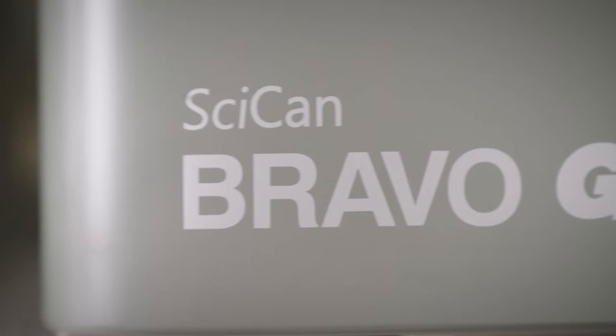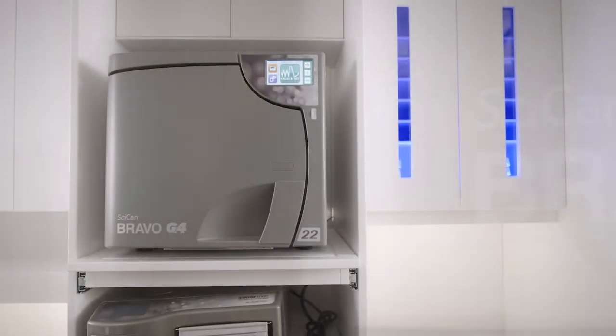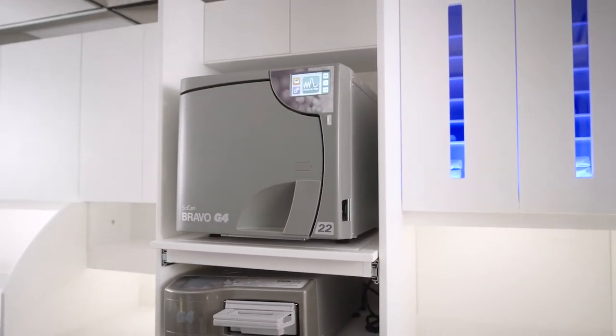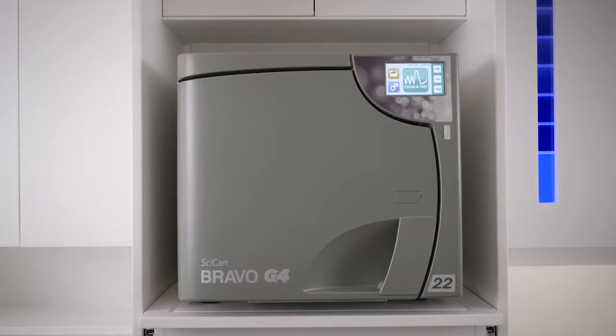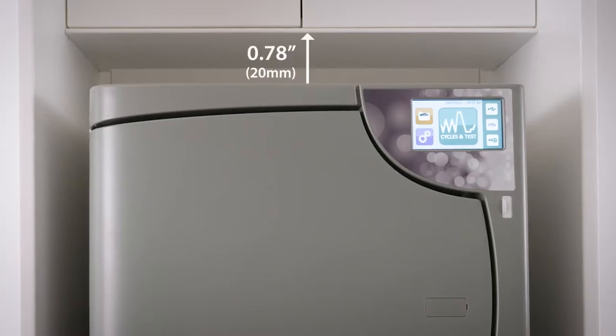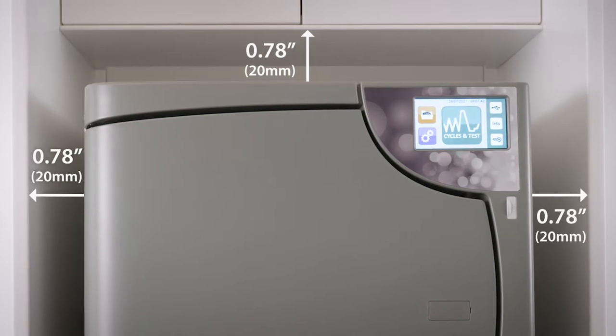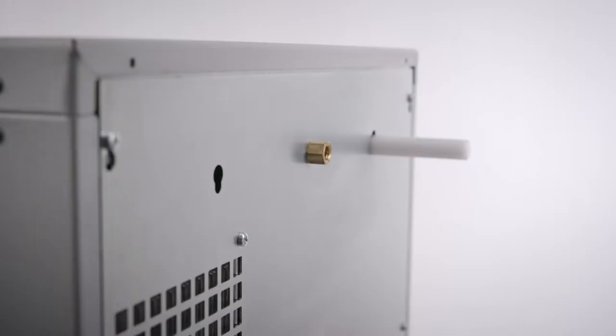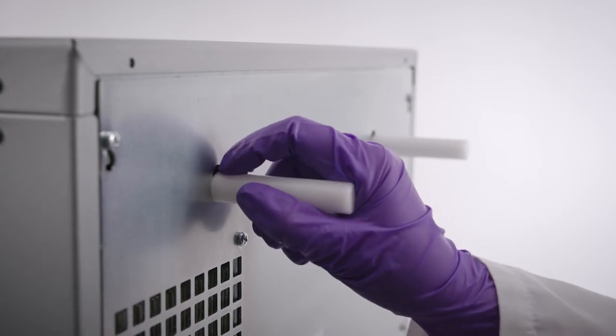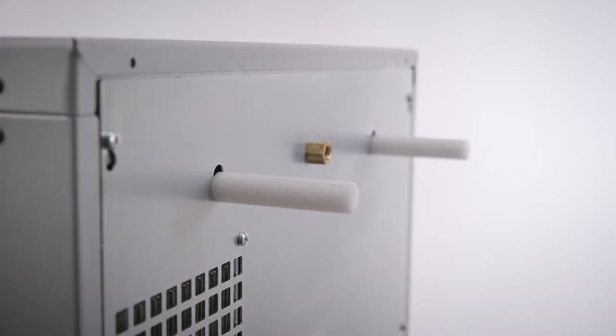When installing the Bravo G4, ensure there is adequate space around the machine to provide effective ventilation, including 20mm or 0.78 inches space for the top, left and right sides of the machine, and 70mm or 2.75 inches space at the back. Spacers are provided with the unit to ensure the proper spacing at the back.